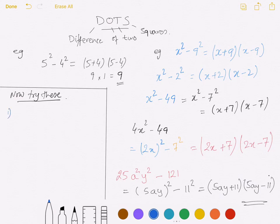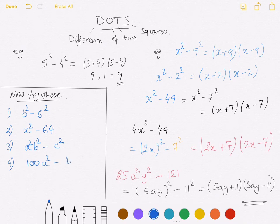Now you can try these questions. First one: b squared minus six squared. Second: x squared minus 64. Third: a squared b squared take away c squared. Fourth: hundred a squared take away b squared. And 225 x squared take away 49 y squared.